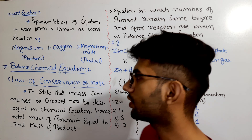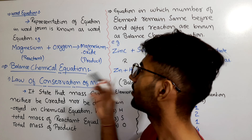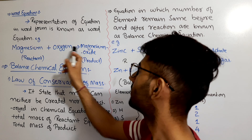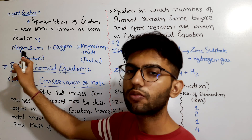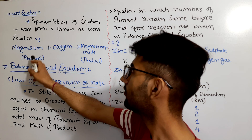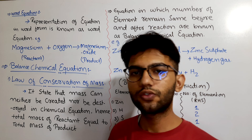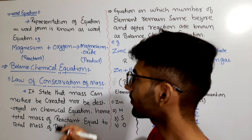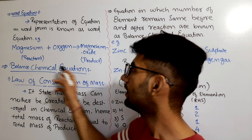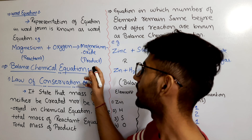Generally we represent equations in simple symbolic form, but when speaking we use the word form — hence the concept of the word equation. For example: when magnesium reacts with oxygen, it forms magnesium oxide. We do not use the symbol of magnesium; we use the word. Those substances written on the left hand side are the reactants, and those on the right hand side are the products.